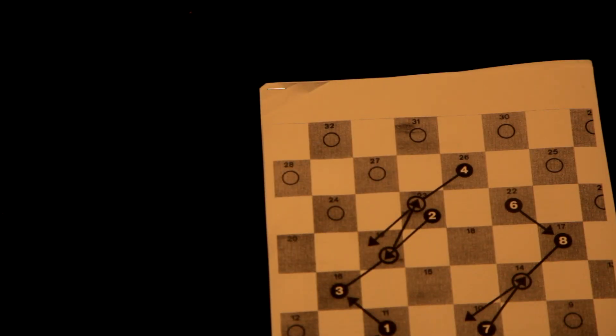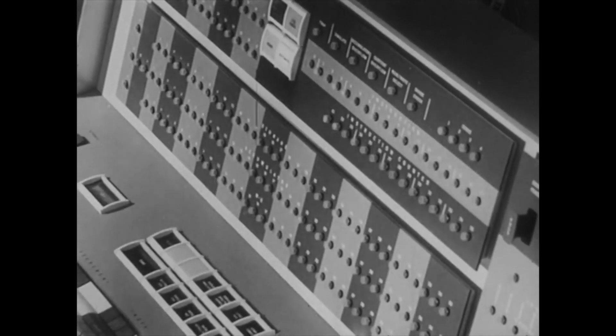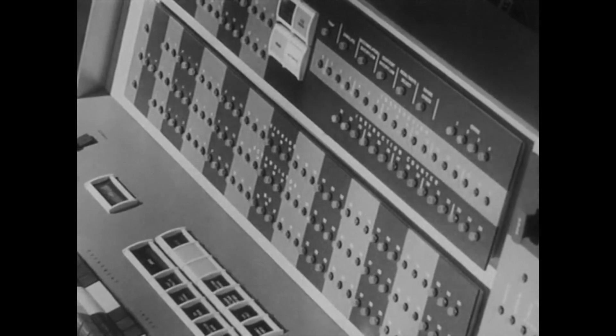This challenge was picked up by Arthur Samuel, who programmed a computer to learn the weight or importance of each feature from self-play, exactly as Shannon had proposed. He worked on a problem harder than tic-tac-toe but slightly easier than chess: checkers.